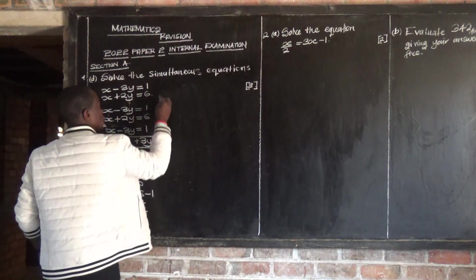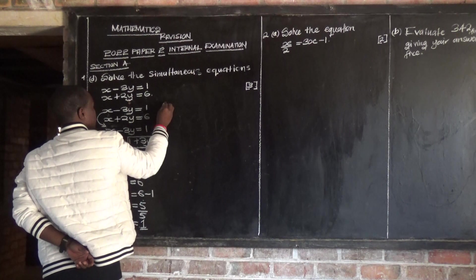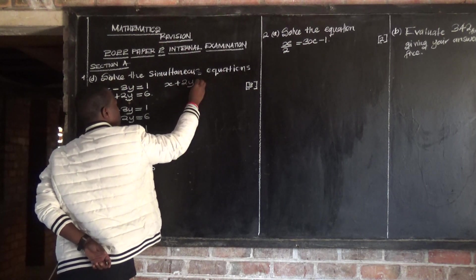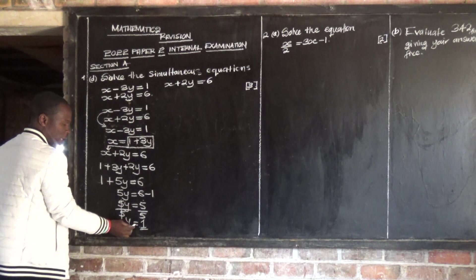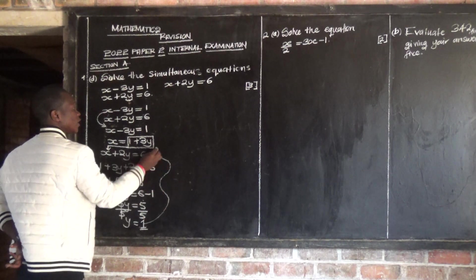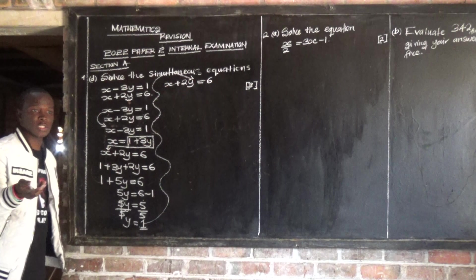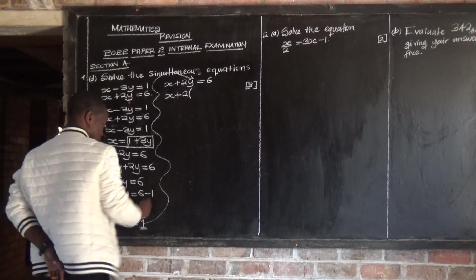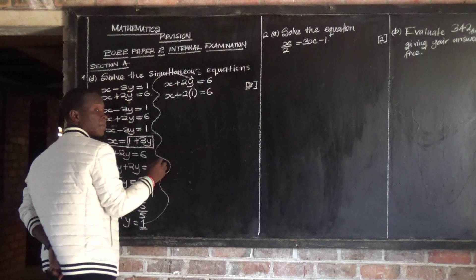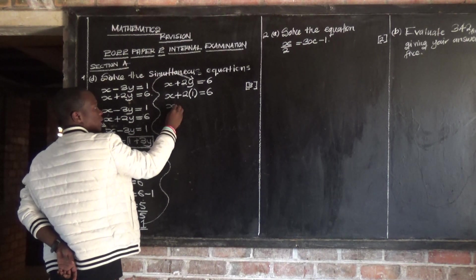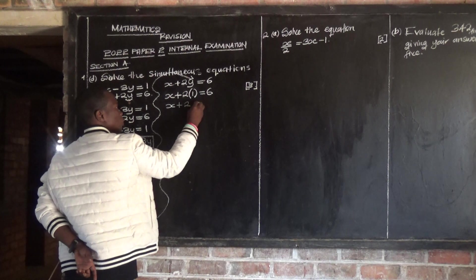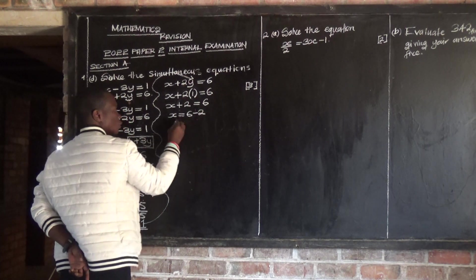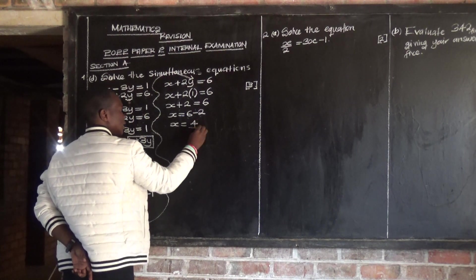Let me use equation number 2. Equation 2 is x plus 2y equals 6. Where there is y, I'm going to put positive 1. So x plus 2 times 1 equals 6, which gives x plus 2 equals 6. So x is equal to 6 minus 2 — transposing the 2. This gives the value of x.